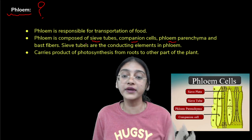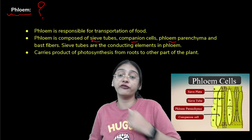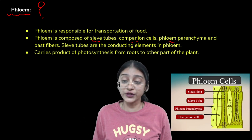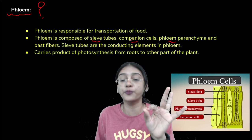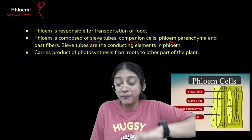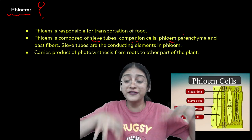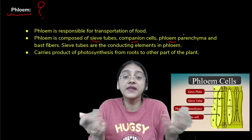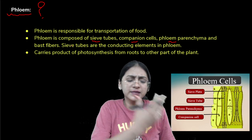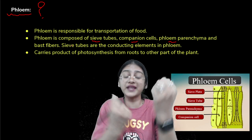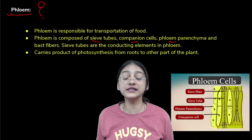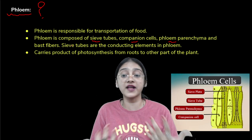Sieve tubes are the conducting elements in phloem, involved in transportation of food molecules. Companion cells act as a companion or life support for the sieve tube, because the sieve tube is a dead cell and needs a living cell to support it. Phloem parenchyma acts as filling cells in the phloem. Bast fibers, also called phloem fibers, provide strength to the other cells of the phloem, similar to xylem fibers.